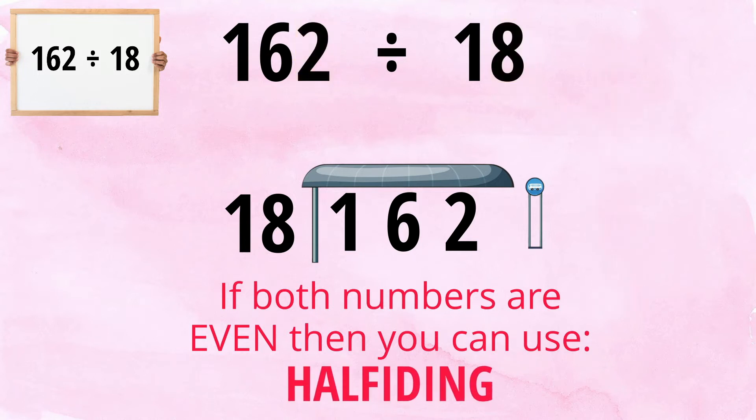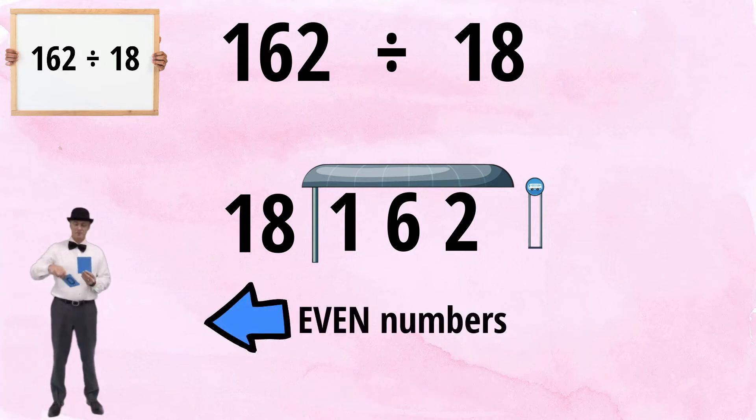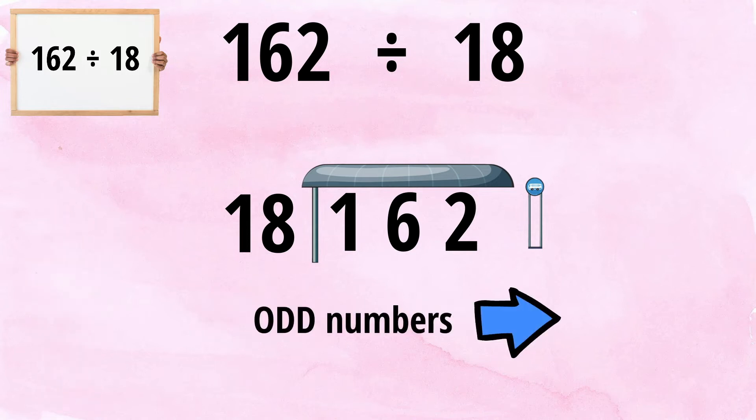And just to be clear, even numbers are numbers that end in either 0, 2, 4, 6, or 8. Odd numbers end in either 1, 3, 5, 7, or 9.